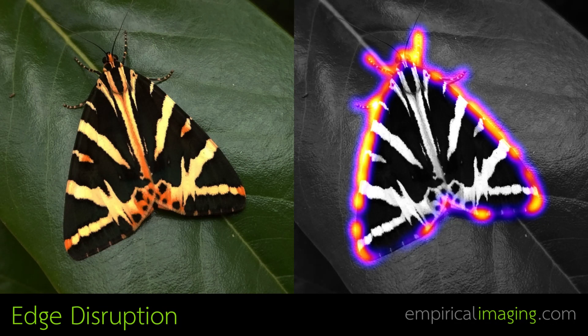The framework also supports the ability to use other components of the MICA Toolbox. For example, you can use edge disruption and create RNL chromaticity space images and then measure the edge disruption of those — effectively looking at chromatic edge disruption, which could be a useful additional tool in many situations.